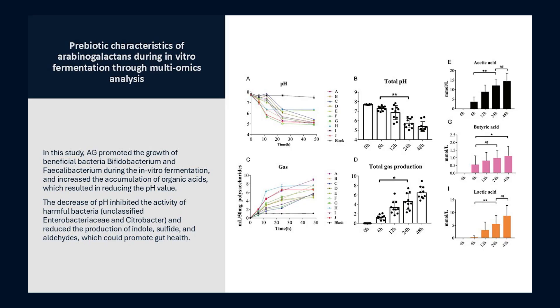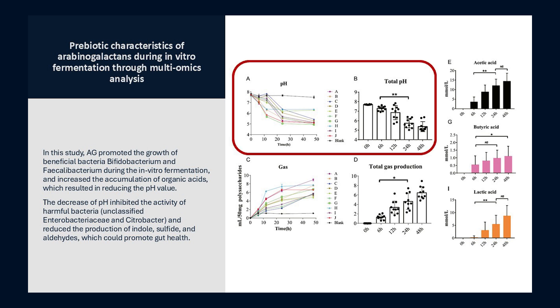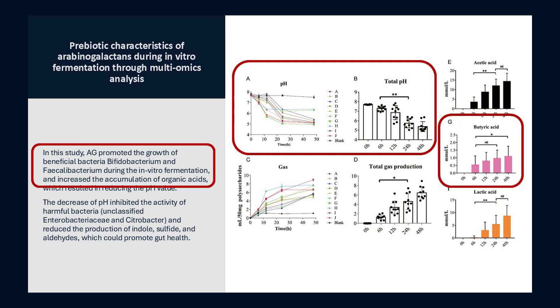In another paper, as fermentation time increased with arabinogalactan, the pH dropped and butyrate increased significantly, along with short chain fatty acids — acetic acid, propionic acid, and butyric acid — due to bacterial fermentation. The pH becomes more acidic, and bacteria such as F. prausnitzii increase because they are provided with the fuels they love and the environment in which they can out-compete the bad actors. It has also been known for some time that larch arabinogalactan is capable of enhancing natural killer cells and macrophages, as well as the secretion of pro-inflammatory cytokines.